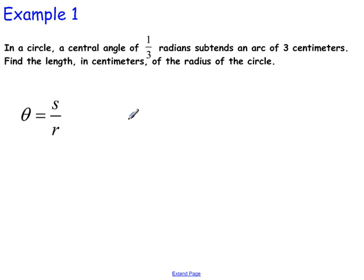All right, so in this problem we are given the central angle theta, so that's one-third. And we are given an arc. So it says that the central angle subtends an arc of three centimeters, so that's S. So S is equal to three centimeters.